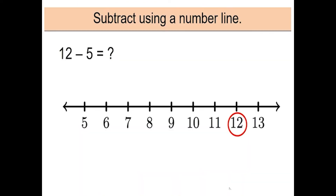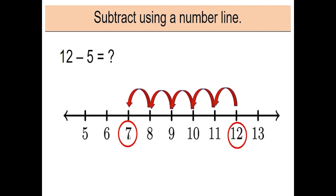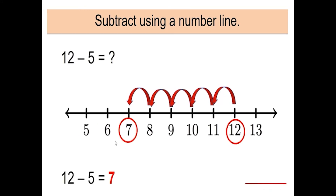Now let us see one more example. Our next question is twelve minus five. Here also we have to start from the first number, that is twelve, then take five jumps to the left from twelve. Now we have reached at number seven. So twelve minus five is equal to seven. I hope you understood subtraction on the number line.